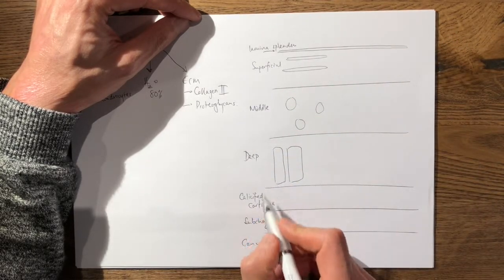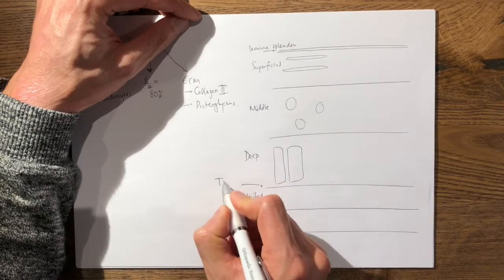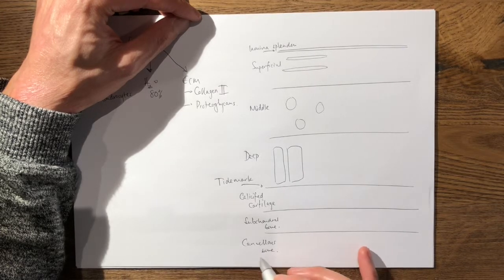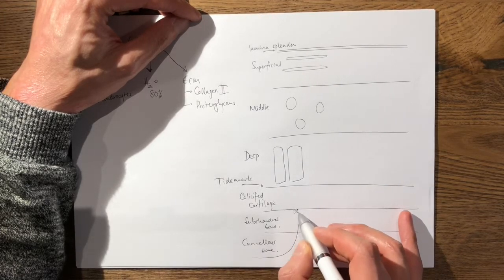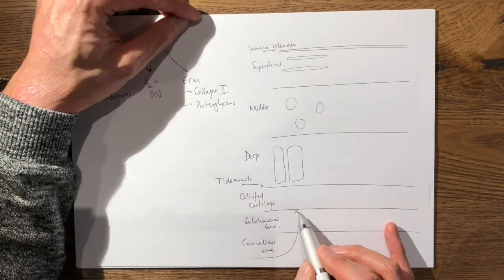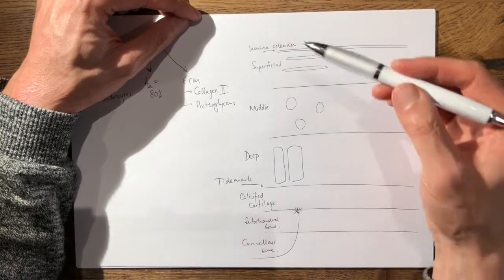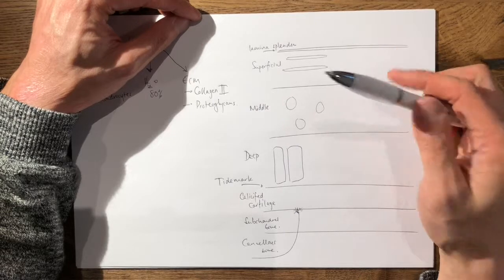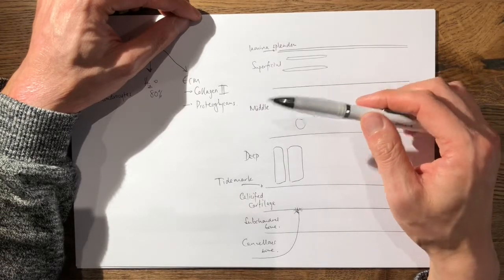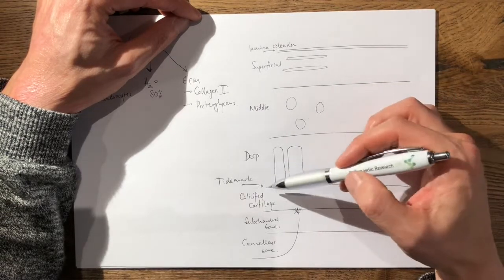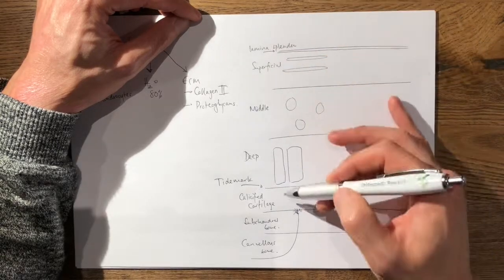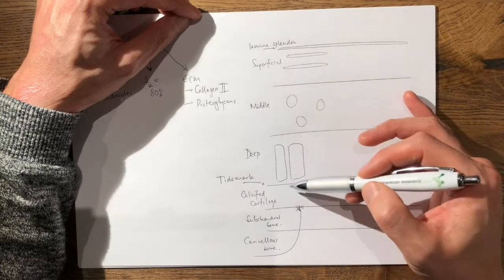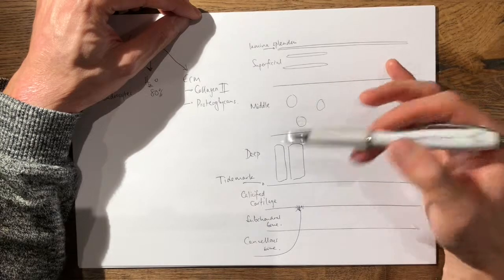And between the deep and calcified layer is your tide mark. And the importance of this tide mark is that the blood supply actually comes from the cancellous bone. We know that the articular cartilage itself is completely void of lymphatics, blood vessels, and nerve fibers. So the clinical importance of this tide mark is that if you do have an injury to the articular cartilage, anything superficial to the tide mark is unlikely to heal. In fact, it won't heal.